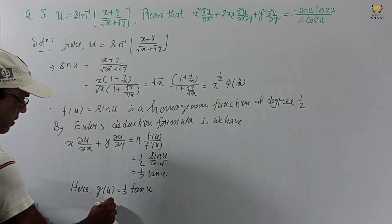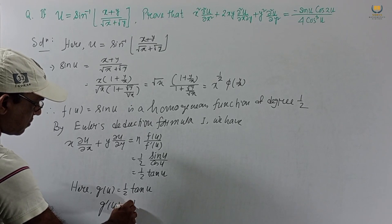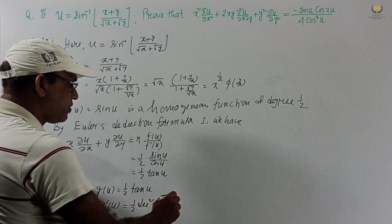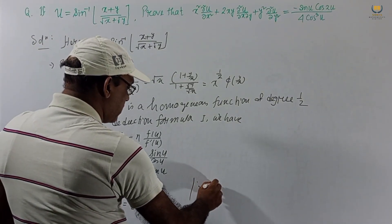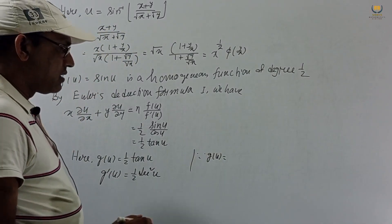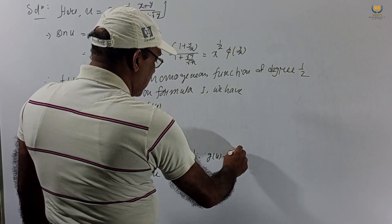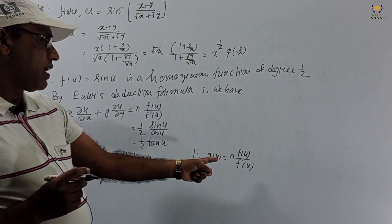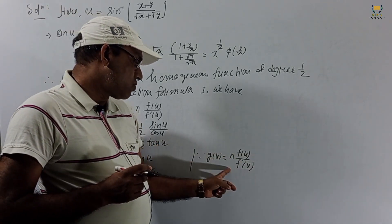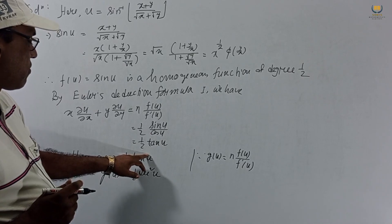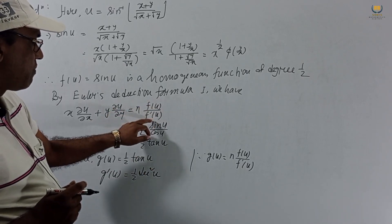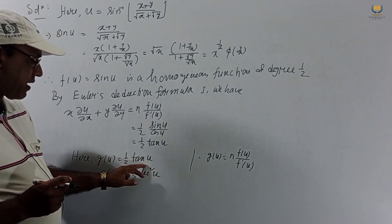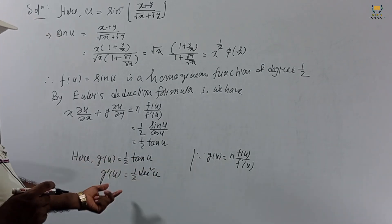Differentiating g(u), if g(u) = (1/2)·tan u, then g'(u) = (1/2)·sec²u. This follows because d/du(tan u) = sec²u. Recall that g(u) = n·f(u)/f'(u) = (1/2)·tan u, and differentiating gives g'(u) = (1/2)·sec²u.